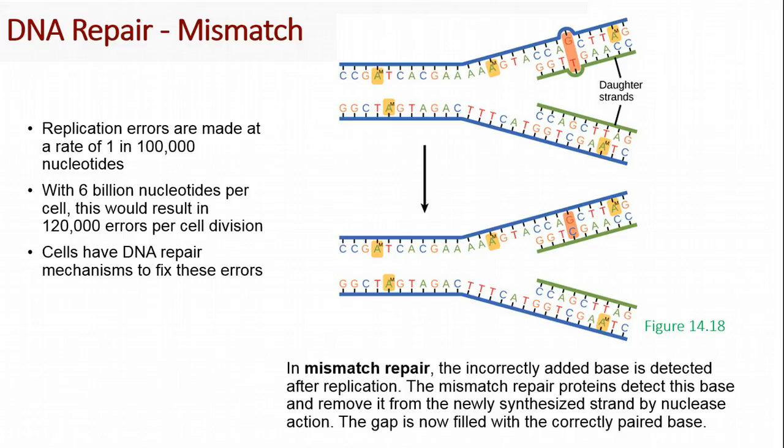We have repair mechanisms that are going to fix these occasional errors in replication. The first type of DNA repair is called mismatch repair. You can see here, DNA is being split in half and new strands are being synthesized. However, we have an error here. Here you see a G bound to a T, and we know that a G should be bound to a C. That is a mismatch.